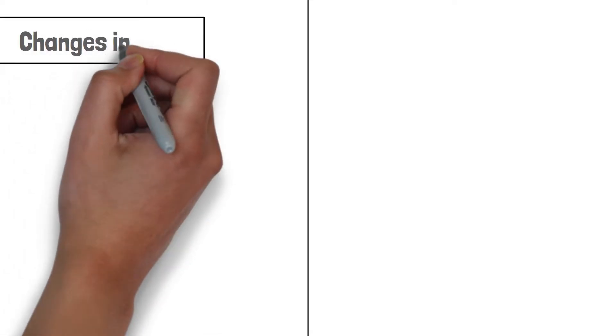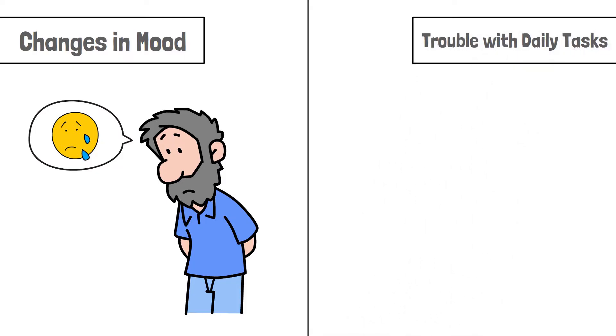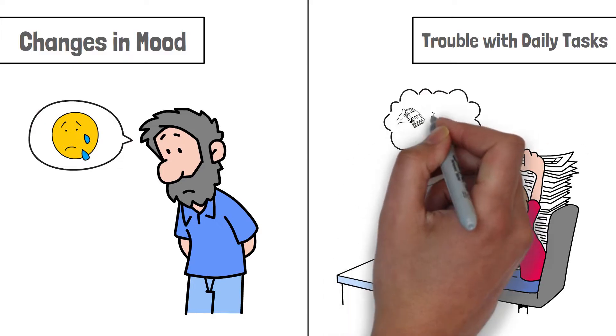Changes in mood. Sudden changes in mood, such as becoming sad or angry without any reason. Trouble with daily tasks. Difficulty in performing tasks that used to be easy, like paying bills or making a shopping list.